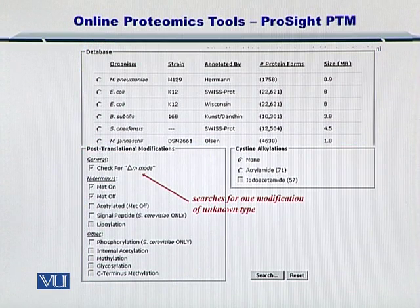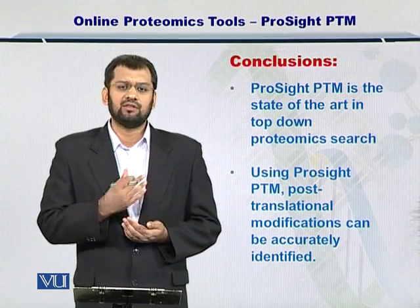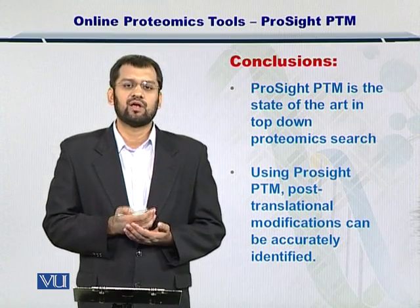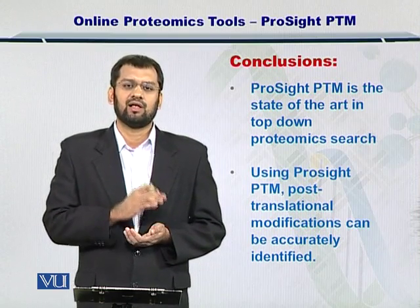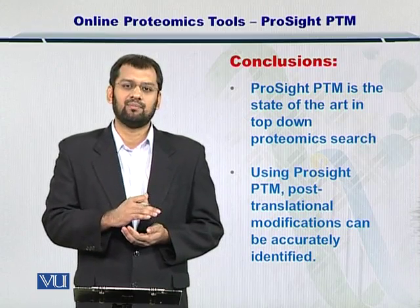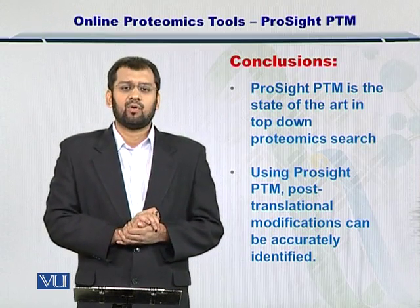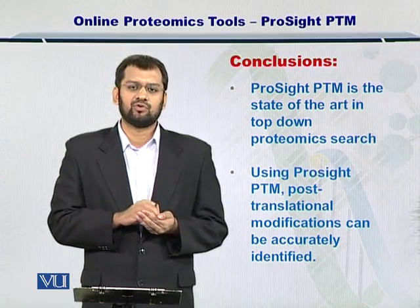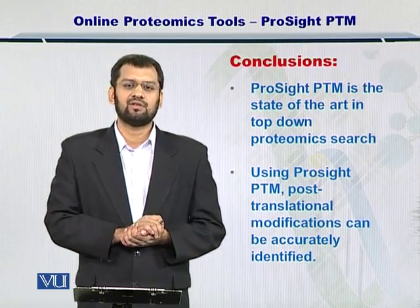So in this way, you can use ProSight PTM, which is an online tool for searching top-down proteomics data. ProSight PTM is the state-of-the-art in searching top-down proteomics data, and now there is ProSight PTM 2.0, also available on the website of the Gallagher Group. You can download a ProSight PTM light version on your computer and search your proteomics data. This is a very important tool you should learn and employ, because top-down proteomics is the future of proteomics experimental protocols.